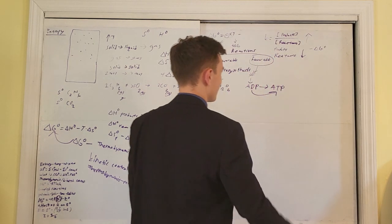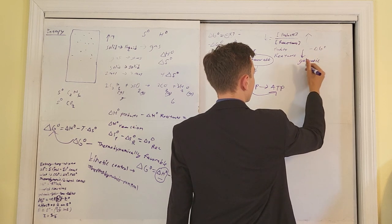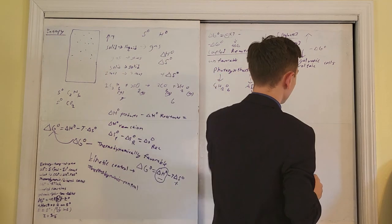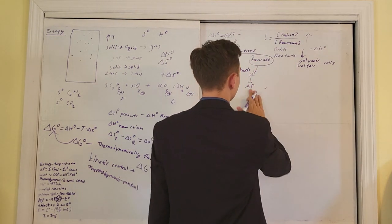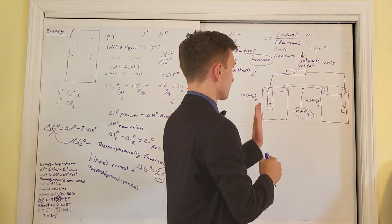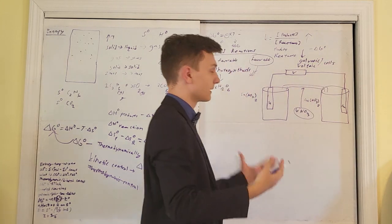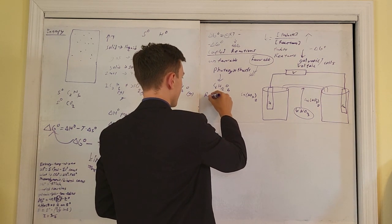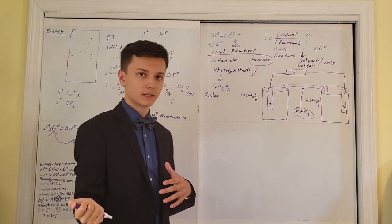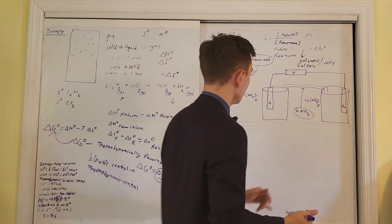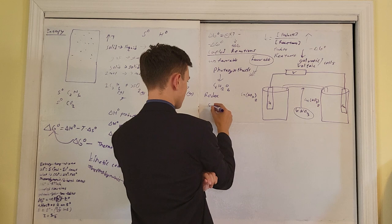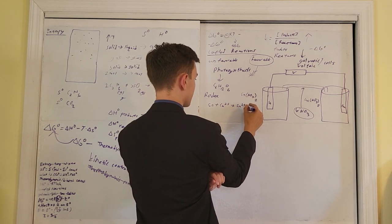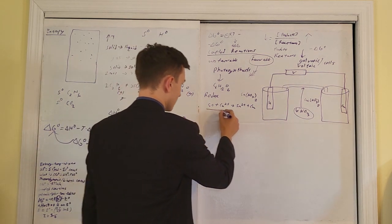The moment you've all been waiting for — batteries. These are called galvanic, also known as voltaic cells. These two words are synonyms and will be used interchangeably on the exam. In a galvanic or voltaic cell, we have a redox reaction going on — something is gaining electrons and something else is losing electrons. In this cell, the overall reaction is: Sn + Cu²⁺ → Sn²⁺ + Cu.